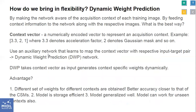So how do we bring in this flexibility? By making the network aware of the acquisition context of each training image and by feeding the context information to the network along with the respective images. We define a context vector as a numerically encoded vector to represent an acquisition context — for example, it could take three entries indicating acceleration factor, anatomy study, and undersampling pattern. We use an auxiliary network called the dynamic weight prediction network that learns to map the context vector with the respective input-target pair. The core idea is that instead of directly learning the model parameters of a base reconstruction network, another network predicts the weights of the base network to effectively handle multiple contexts.